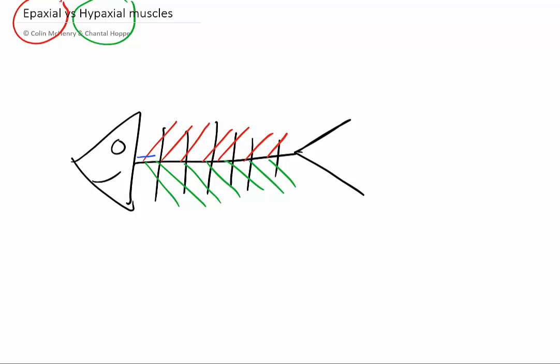So if we think about the spinal cord here, and out of our spinal cord are coming our spinal nerves, and there we go, there's one spinal nerve coming out for each segment.